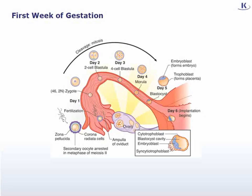Gestation begins with fertilization, which takes place in the ampulla of the fallopian tube when a spermatozoid meets with the secondary oocyte arrested in metaphase of meiosis II, forming a zygote. After fertilization, the zygote undergoes rapid successive mitotic divisions (cleavage) in the oviduct to form a blastula consisting of increasingly smaller blastomeres. At the 32-cell stage it is called the morula. A blastocyst forms as fluid develops within the morula, containing an inner cell mass known as the embryoblast, which will become the embryo, and an outer cell mass known as the trophoblast, which becomes the placenta.